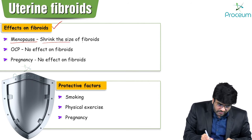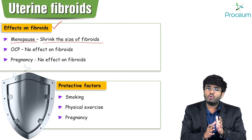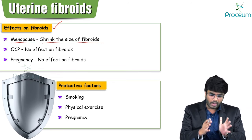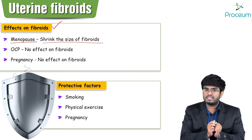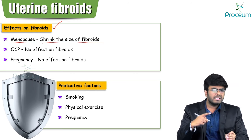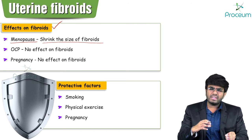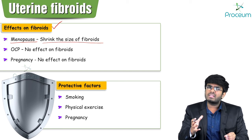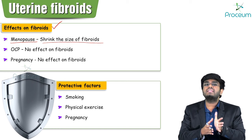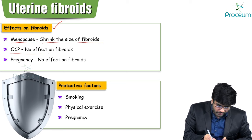Regarding effects on fibroids: menopause shrinks the size of fibroids, because during menopause there is atrophy of the urogenital system, and the fibroid is part of the uterus. This is important in management — asymptomatic or even symptomatic fibroids in menopausal women may not need aggressive treatment since menopause itself will shrink them. OCPs have no effect on fibroids.